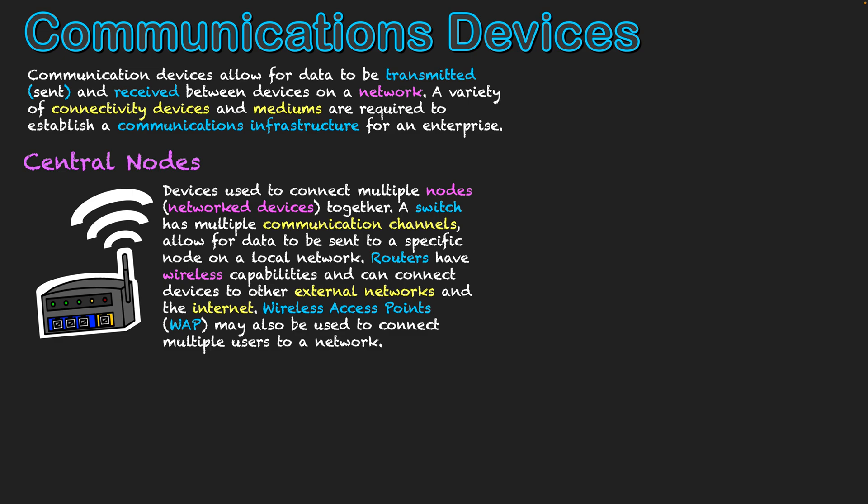We also have what's known as a router, and you might have a router within your home. They also have ports, though usually not as many, but they also have wireless capabilities. You might connect your mobile devices wirelessly to your router to get Wi-Fi within your home and connect to the internet. They don't just provide connection to the internet — they also give us access to external networks.